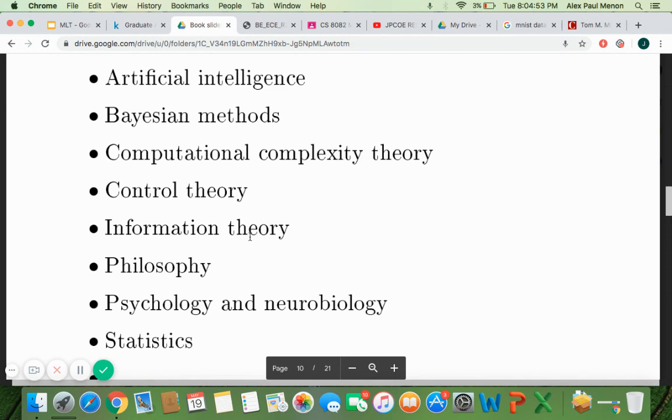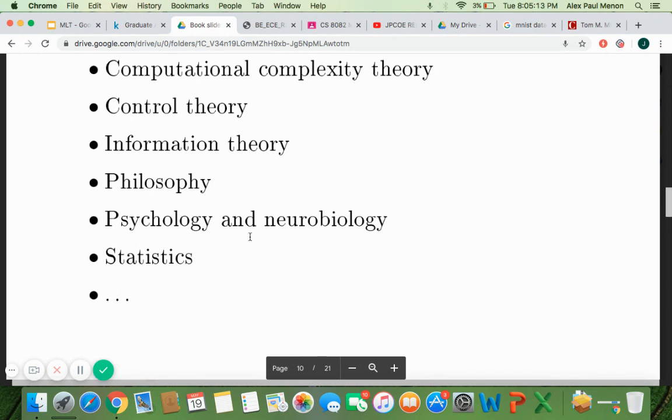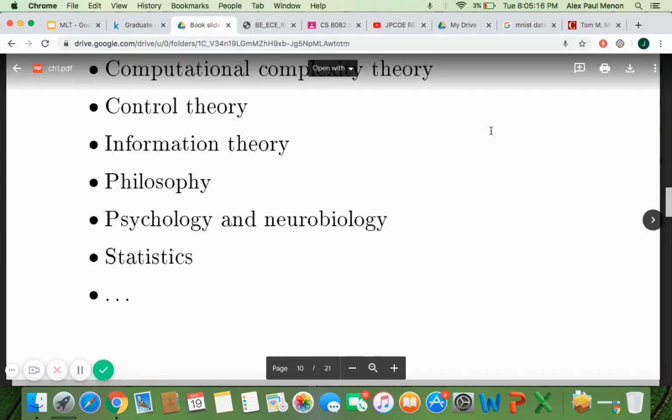There are a lot of relative disciplines like artificial intelligence, Bayesian methods, control theory, information theory, philosophy. These are all different areas due to which machine learning has evolved. So machine learning is not on its own. It is one paradigm of all these technologies. These are all different technologies trying to govern or trying to improve the dynamics of machine learning. The rest will continue in the next session. Thank you.